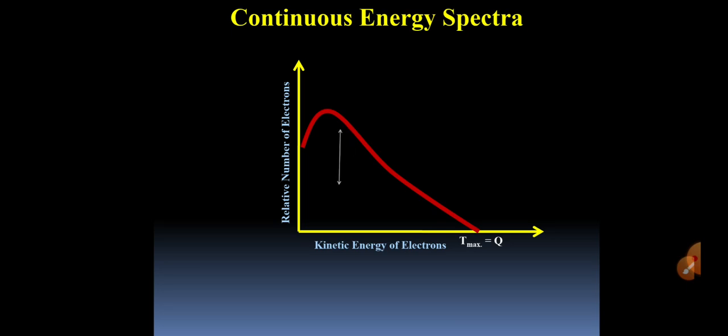It was experimentally found that beta particles carry only one-third of endpoint energy. However, two-thirds part of endpoint energy was missing. Most of the electrons carry average energy which is one-third of the decay energy or maximum kinetic energy, but two-thirds part of energy was missing.